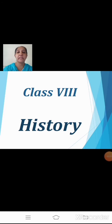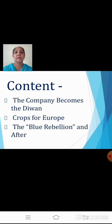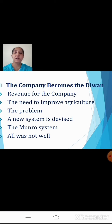Let's begin with Class 8 History Chapter 3, 'Ruling the Countryside,' the fourth part of this chapter. We are doing this today. You all know very well about the content: the company becomes the divan. We have completed crops for Europe and today we are going to deal with the Blue Rebellion.